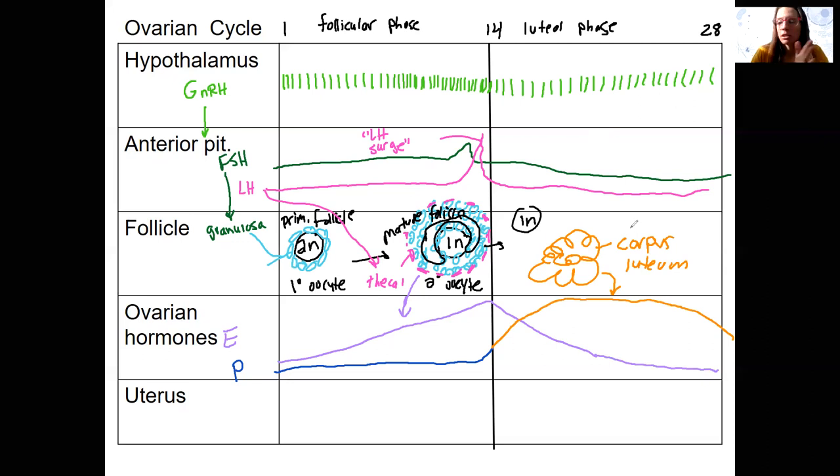Last thing for this slide here is the uterine cycle. So what's happening in the uterus? In the uterus, we have various phases. Basically, we have proliferation and we've got menses. So day one of your ovarian cycle is when you start menstruating. So that's the day of your period. This is the endometrial lining. So layers of tissue that build up inside the uterus and then shed. So this is our menses. This is bleeding.